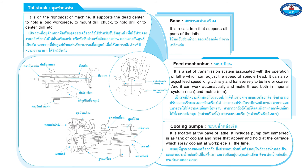Cooling pumps. Located at the base of the lathe, the cooling system includes a pump immersed in a tank of coolant and a hose mounted at the carriage which sprays coolant onto the workpiece continuously.